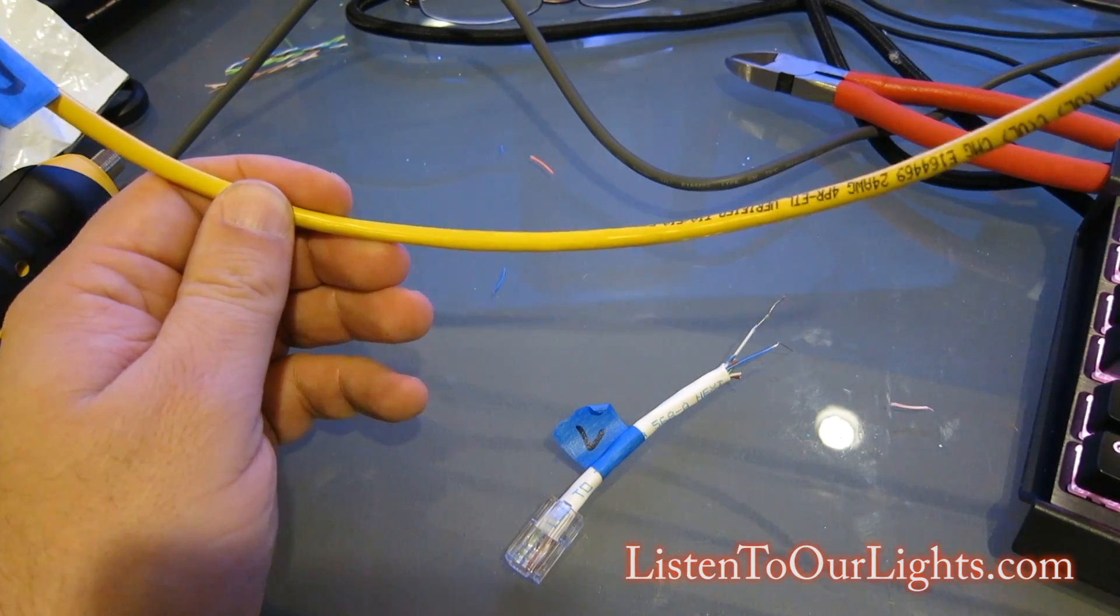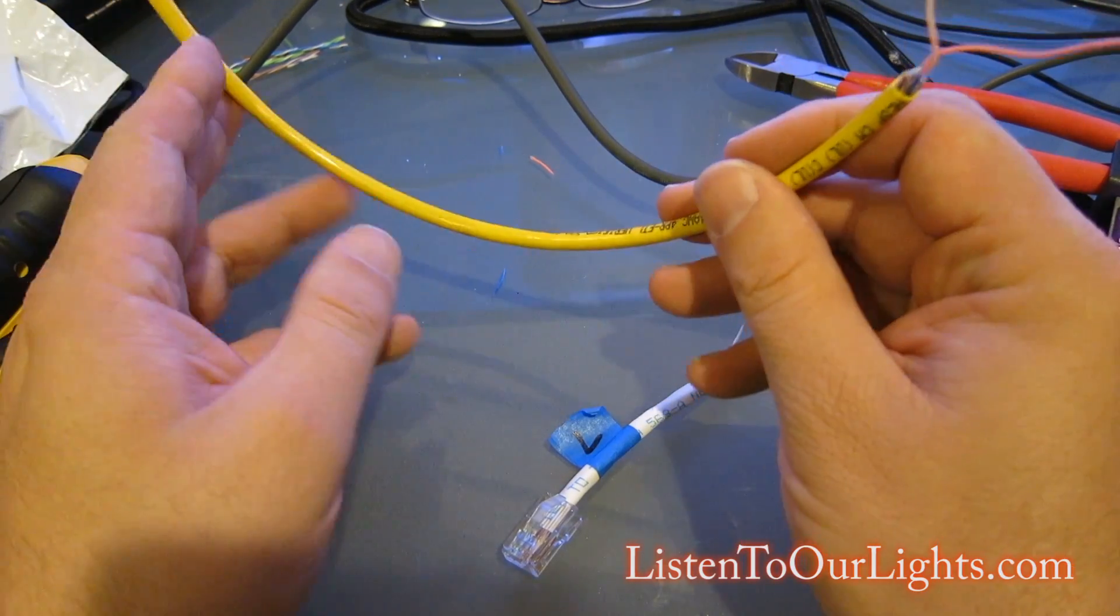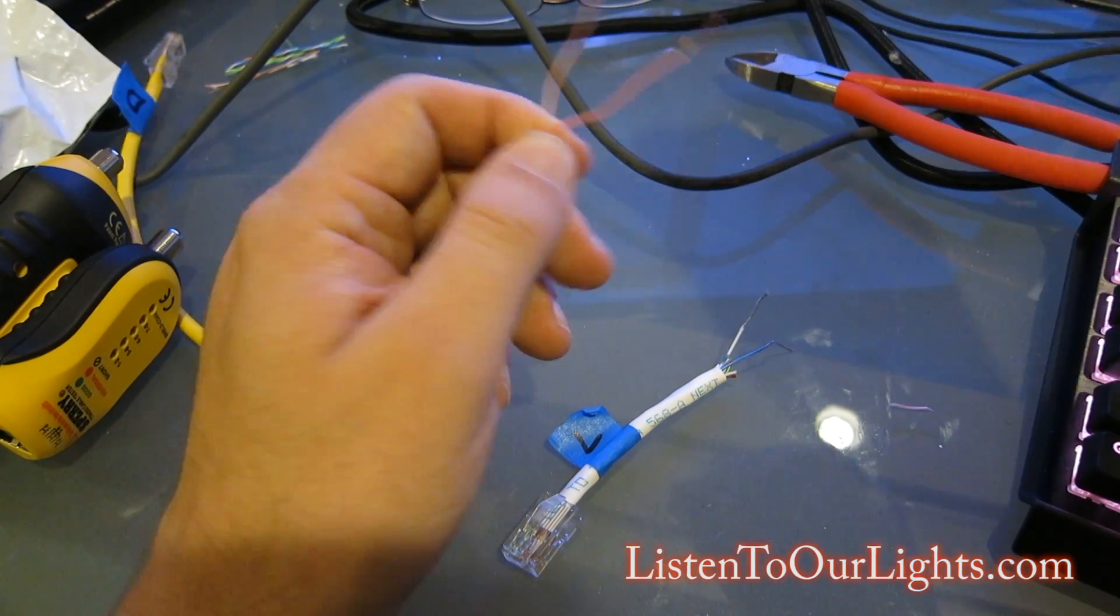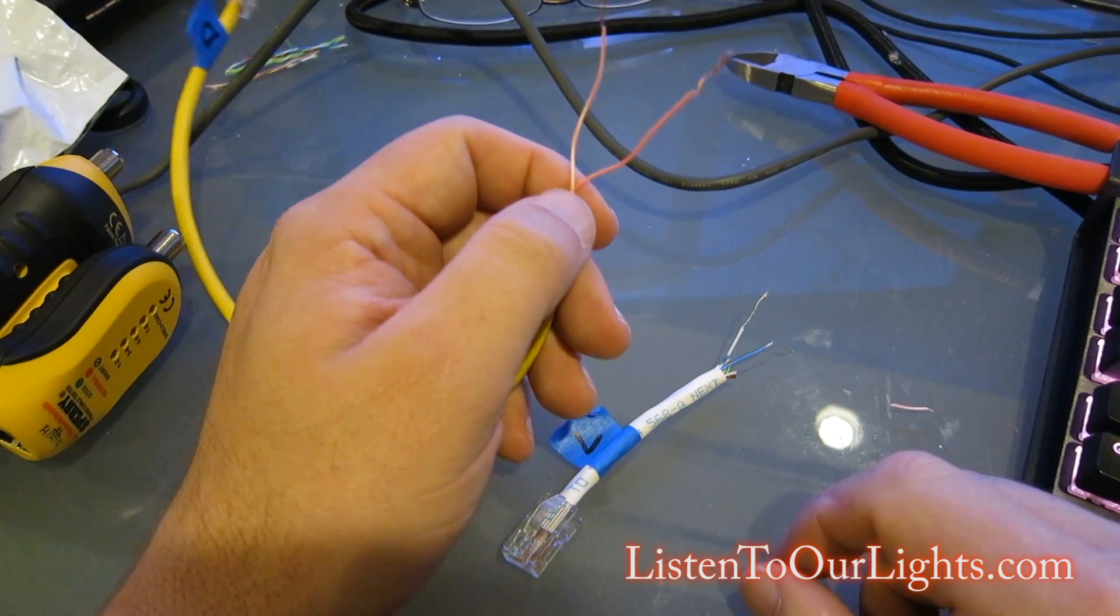So in the world of DMX, data is transferred on pins 4 and 5, which, if you wired up your cable normally, is orange and orange stripe.